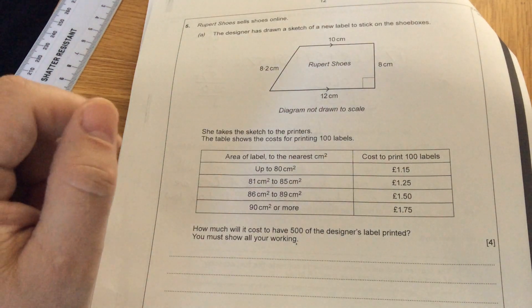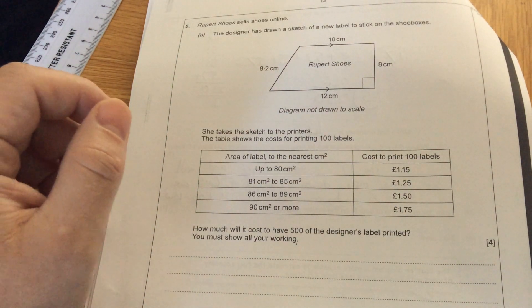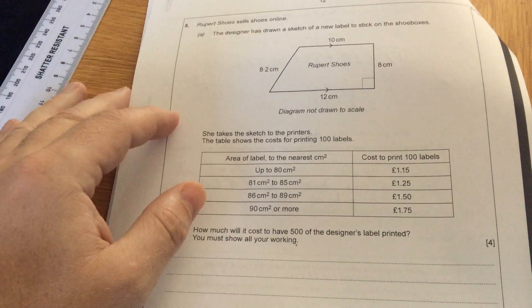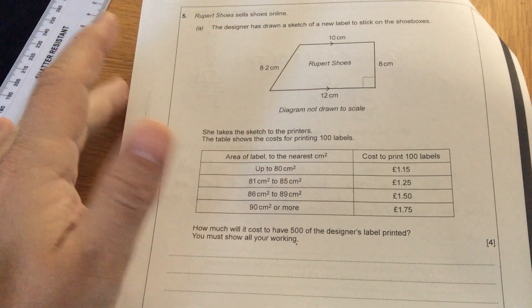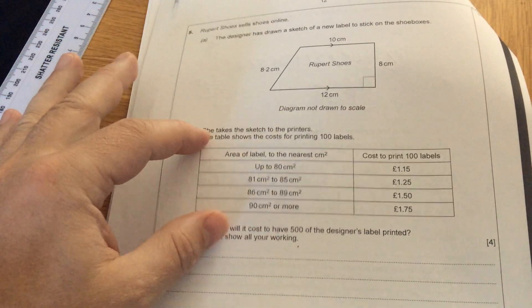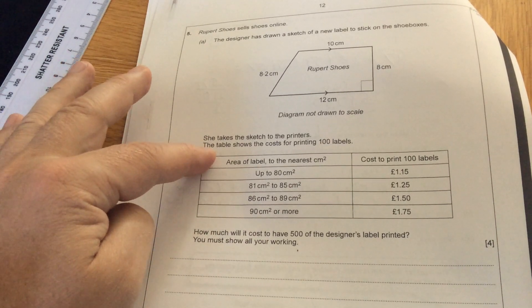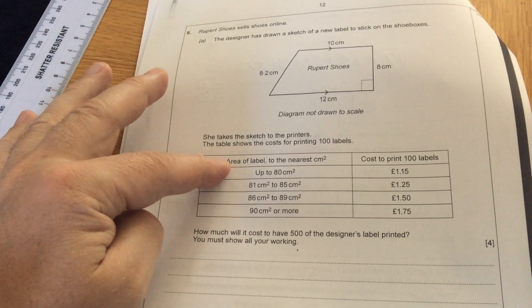Question five. Robert Shoe sells shoes online. The designer had drawn a sketch of a new label to stick on the shoe boxes. It's a trapezium. She takes the sketch to the printers. The table shows the cost for printing 100 labels.